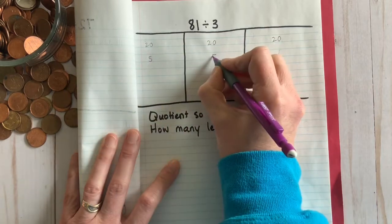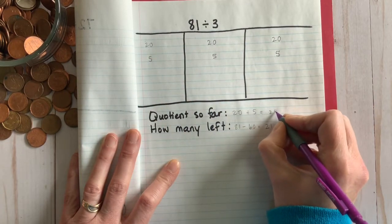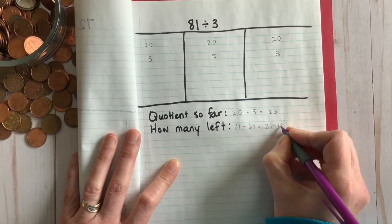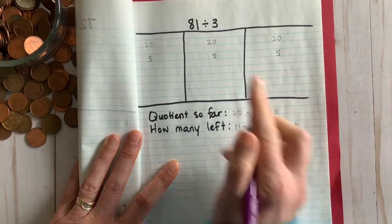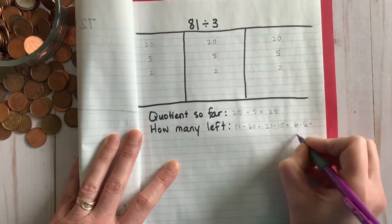We decided to share out five groups each. You could have approached this differently if you wanted. Six more to divide.